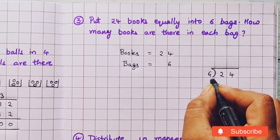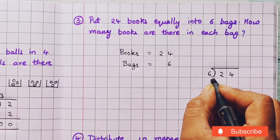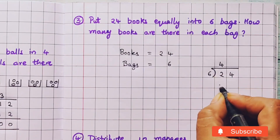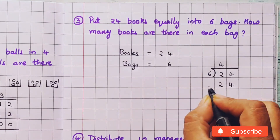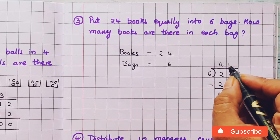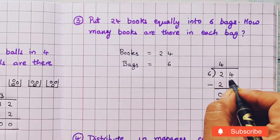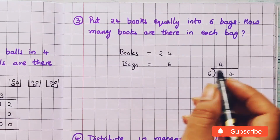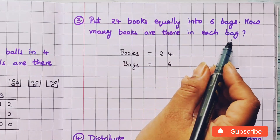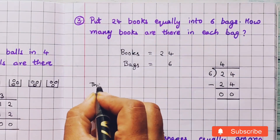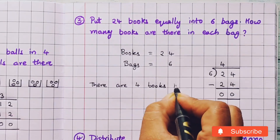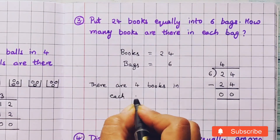Let's say the table of 6: 6 ones are 6, 6 twos are 12, 6 threes are 18, 6 fours are 24. So here we write 4, and here we get 24. Let's do the subtraction — we get 0 as the remainder. So the answer is 4. 24 divided by 6 is 4. Let's write the answer: how many books are there in each bag? There are 4 books in each bag.